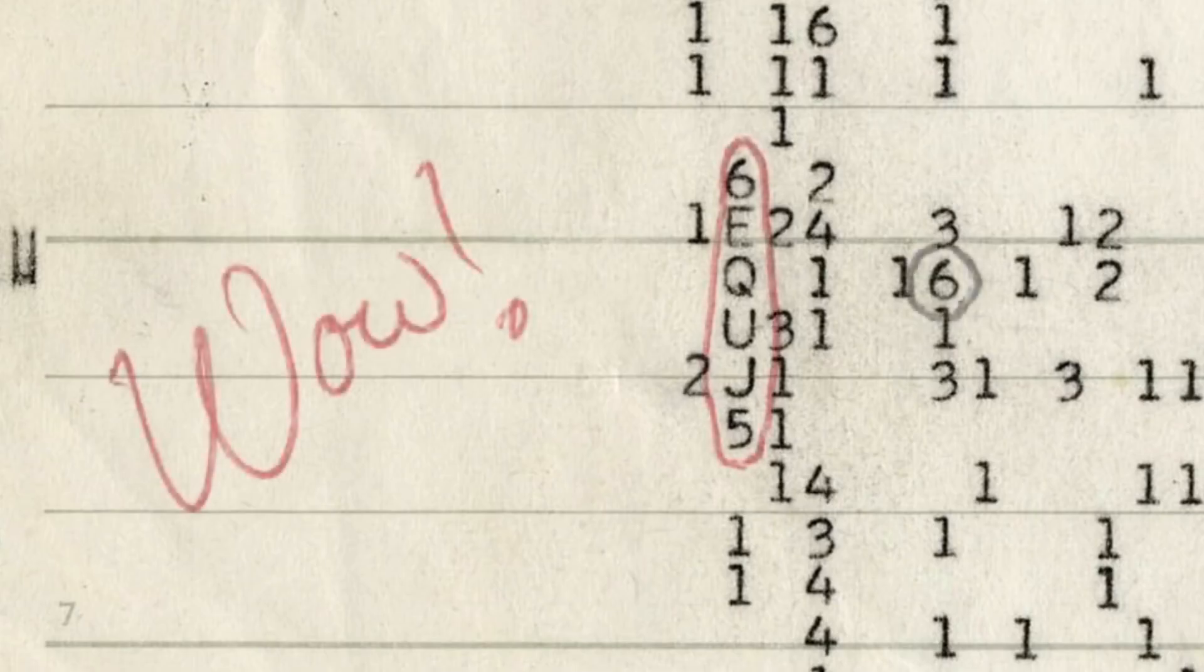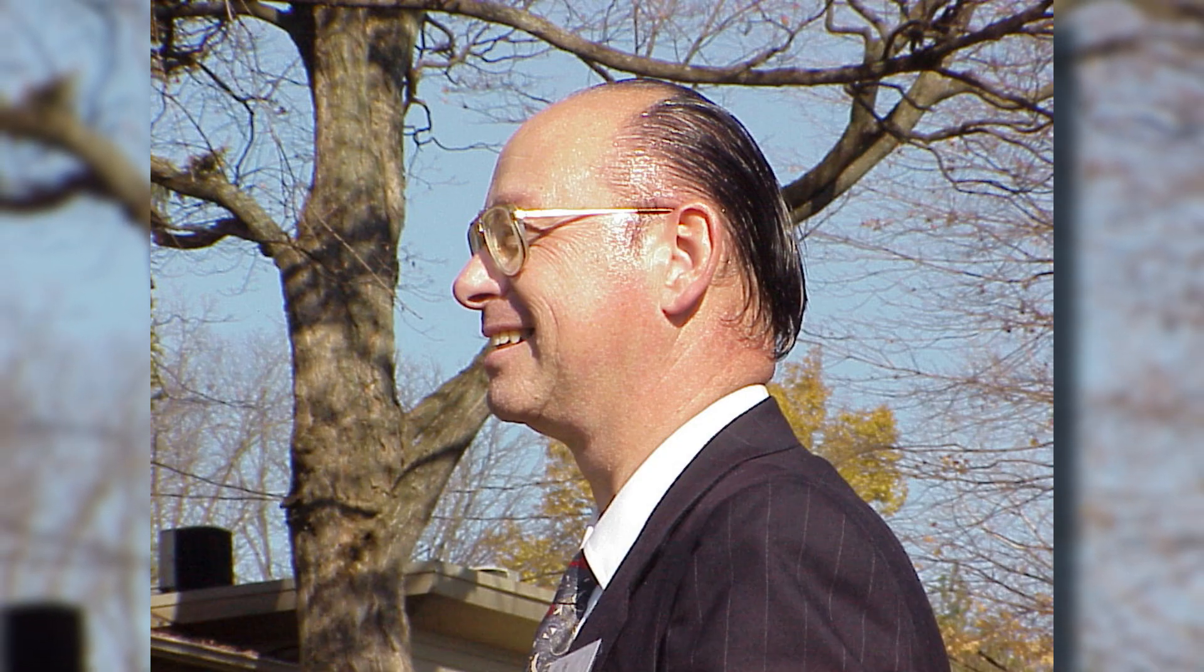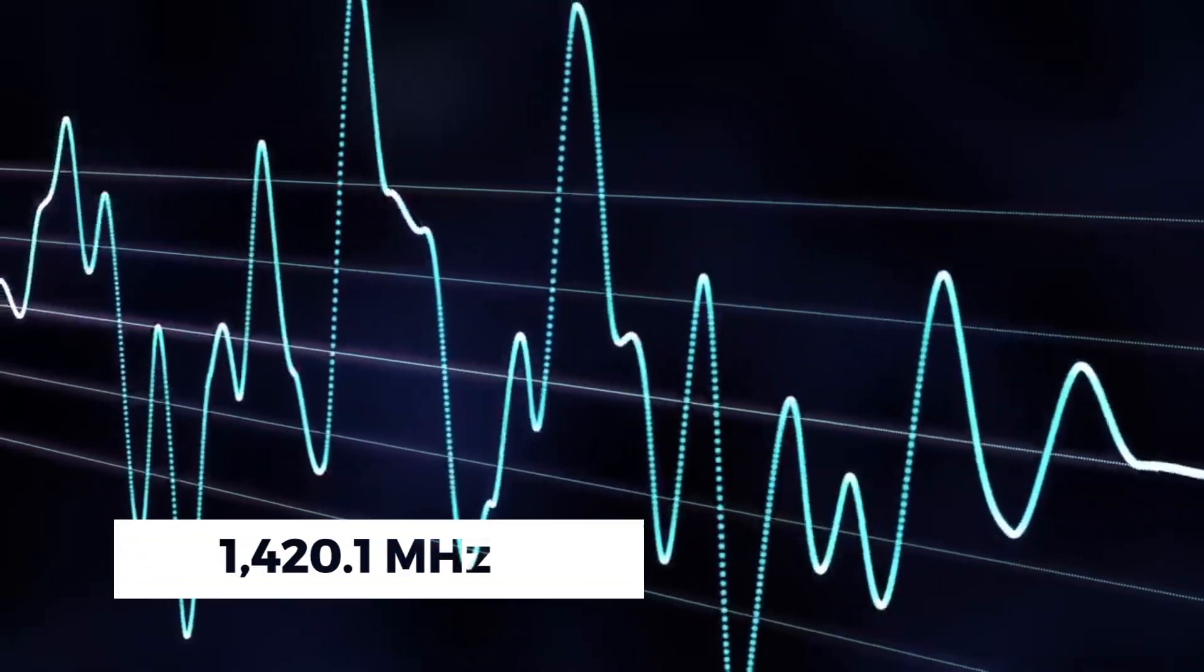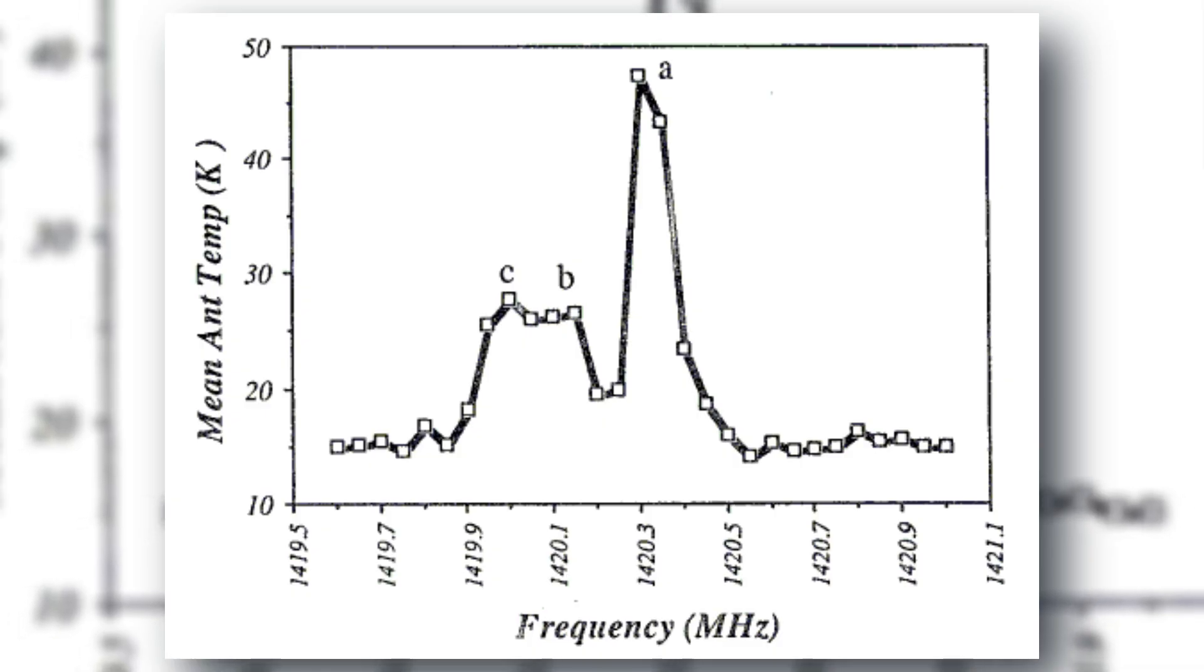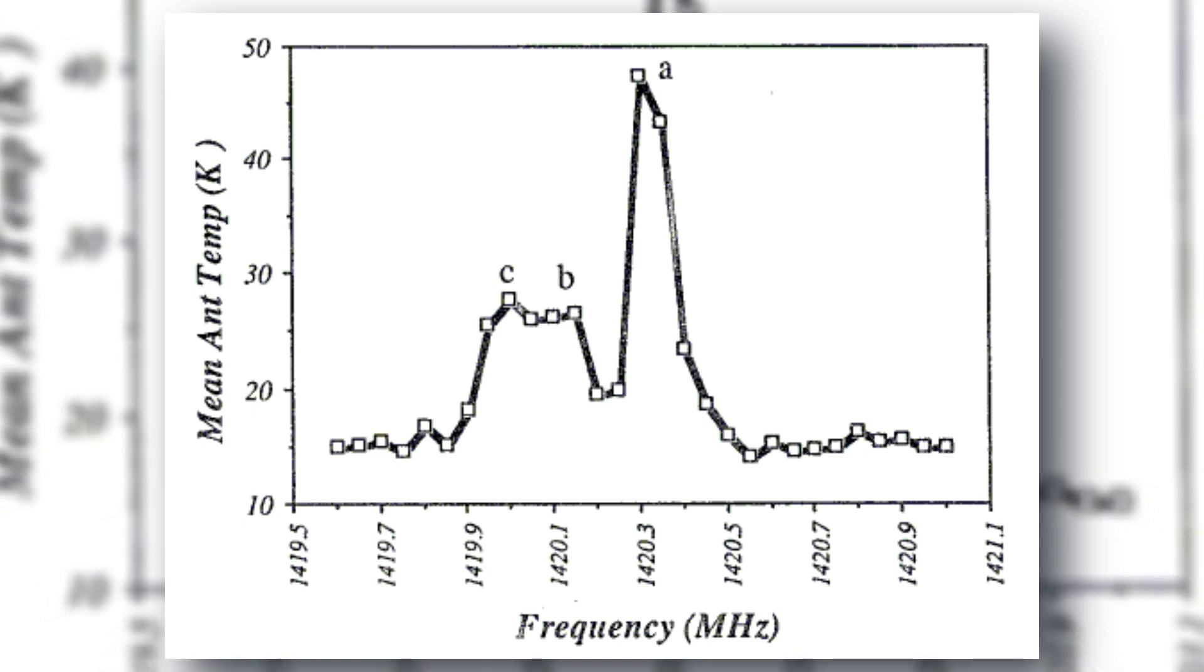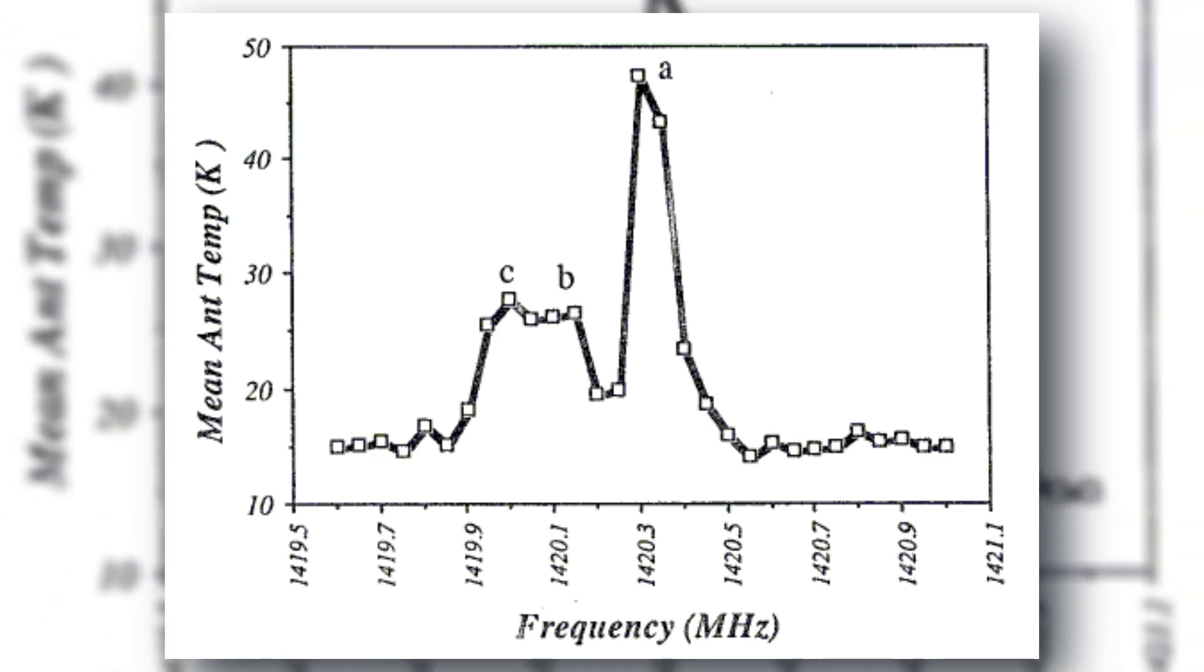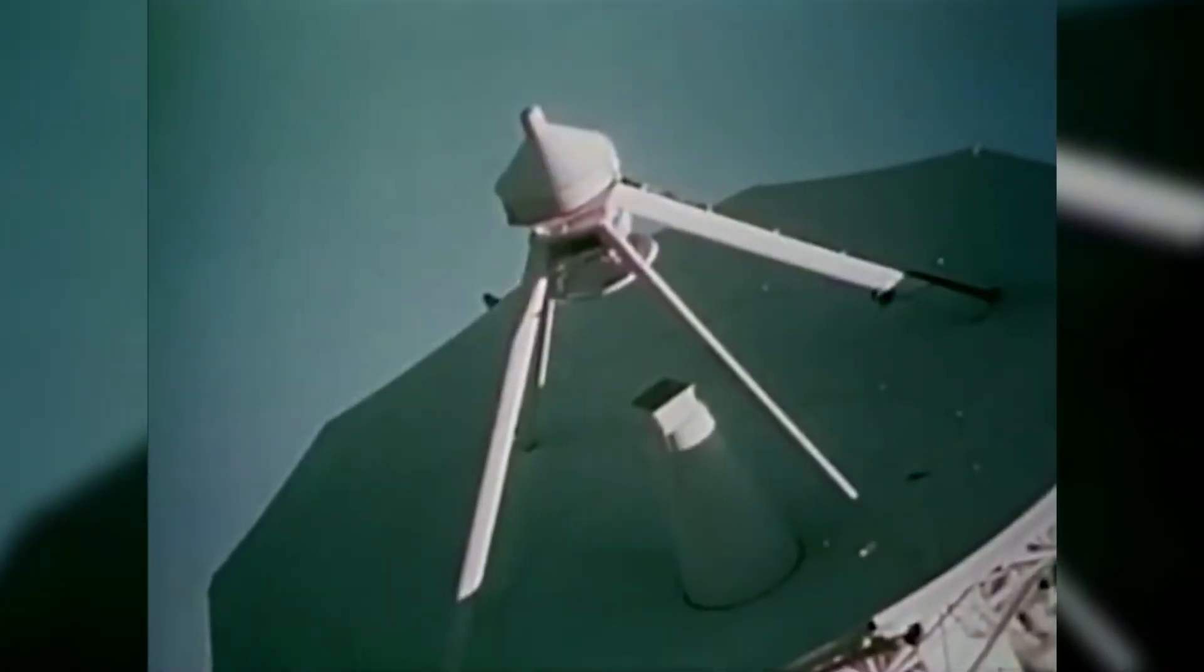What led Dr. Ehman to label this discovery as the Wow signal? The answer lies in the specific frequency at which the signal was intercepted: 1420.1 megahertz. This frequency corresponds to the hydrogen line, which is deemed by numerous scientists as a likely frequency for communication if used by extraterrestrial civilizations.